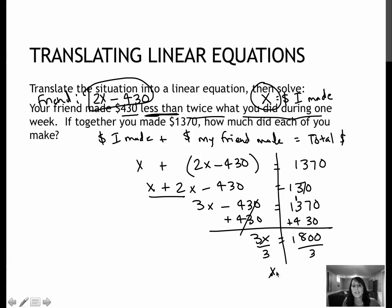Now I would divide by 3 to get that x equals 600. Remember that what I'm trying to do is solve to find how much each of us made. And so if I made x, I made $600, and my friend made 2 times x minus 430. So 2 times 600 is 1,200, minus 430 is 770. And so I made $600, and my friend made $770. So hopefully she'll buy me lunch.